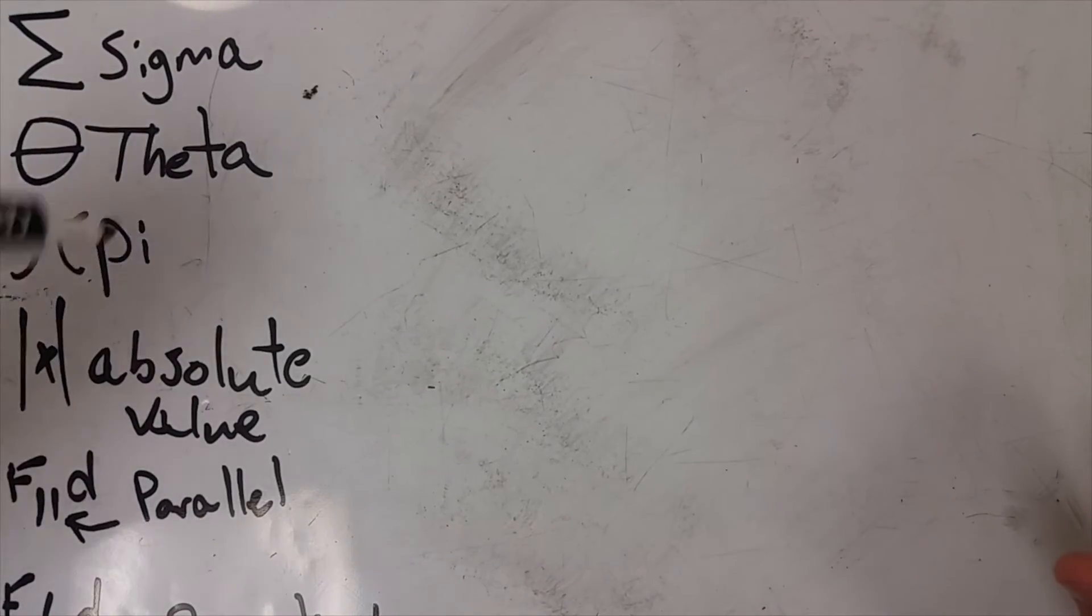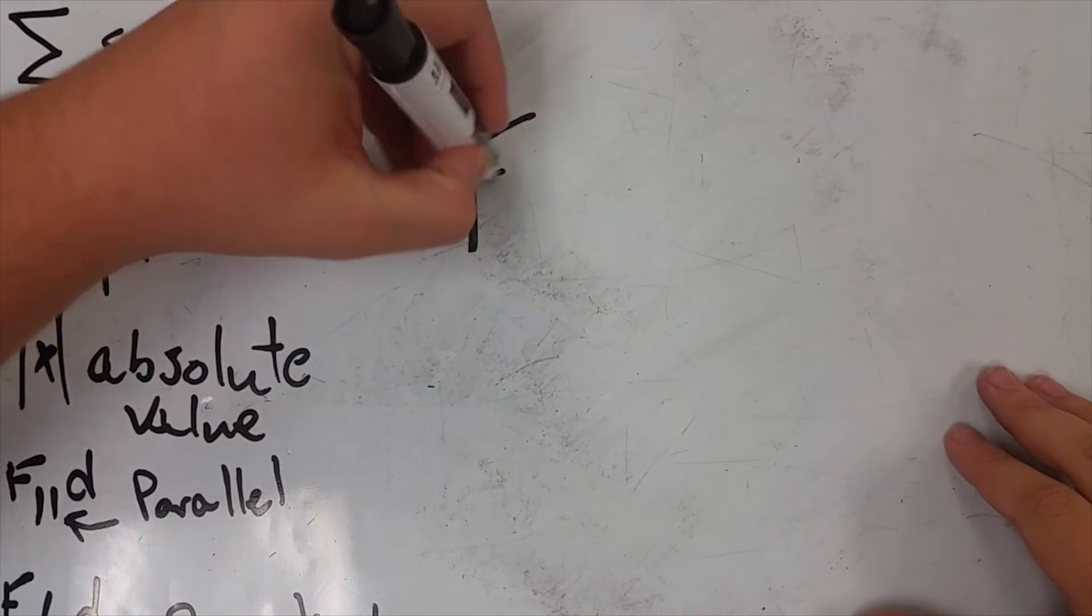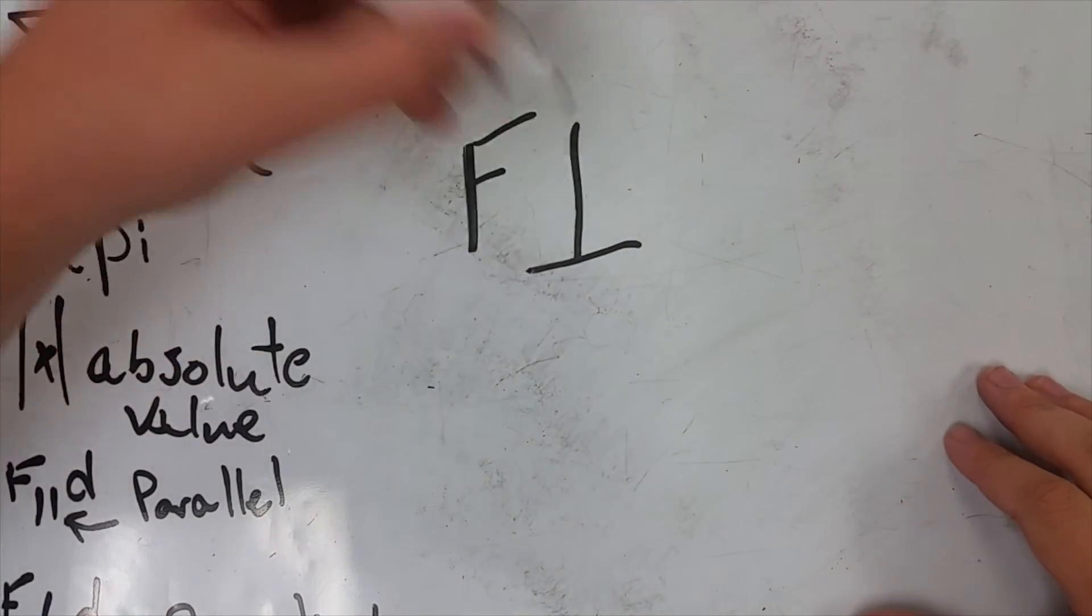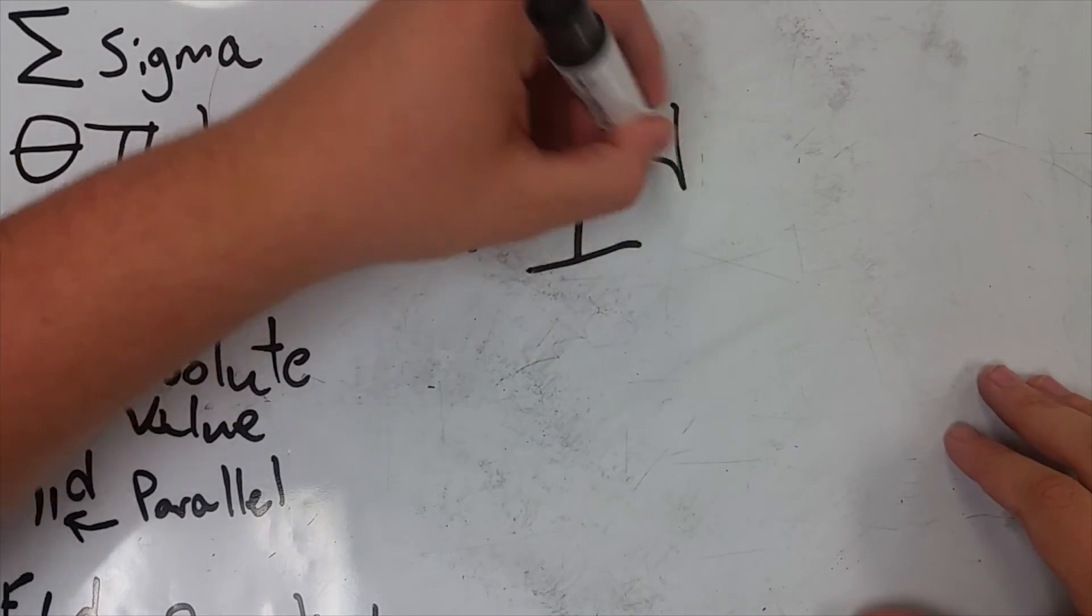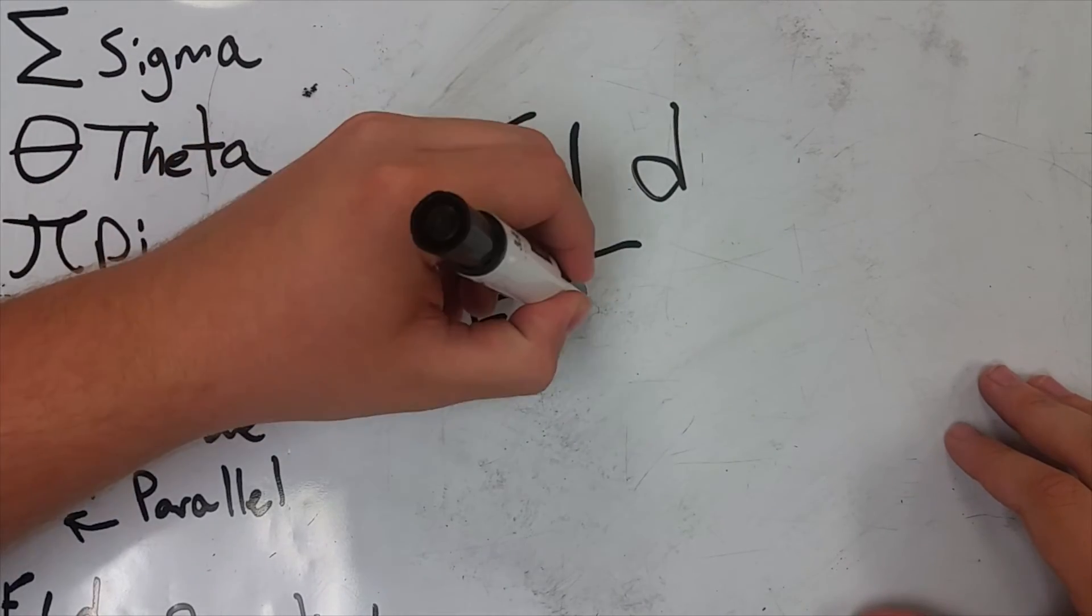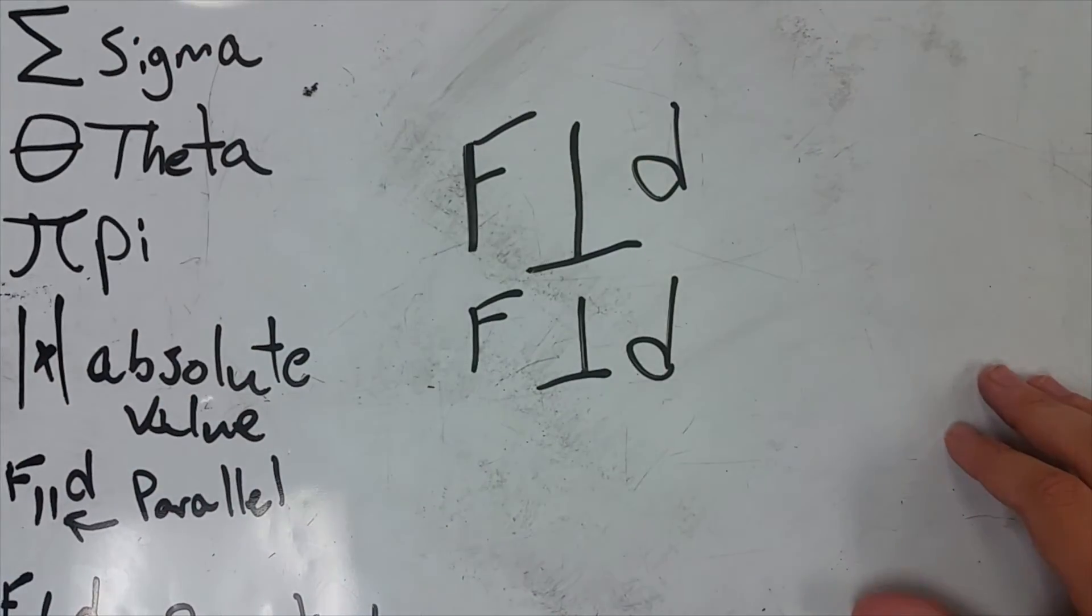The next symbol we're going to go over is perpendicular. So using the same variables as last time, you'll see something like that, which means F is perpendicular to D. That's how it's written.